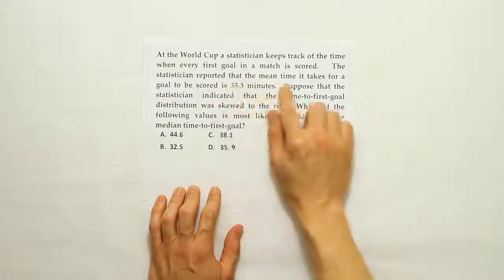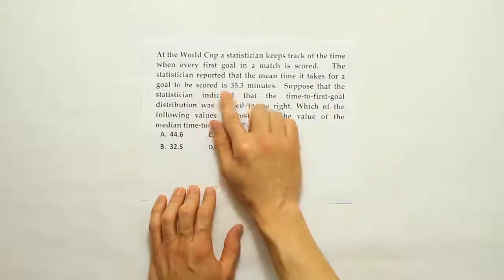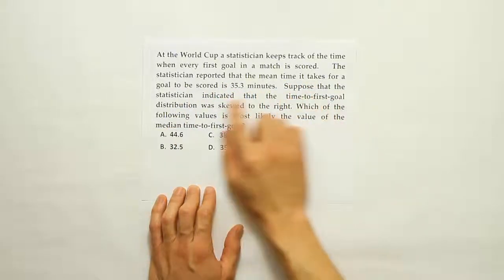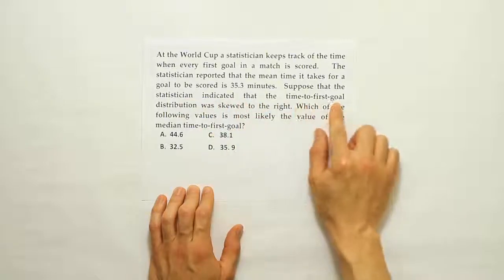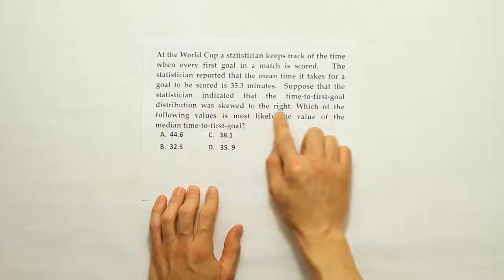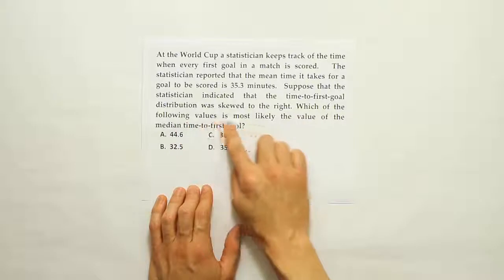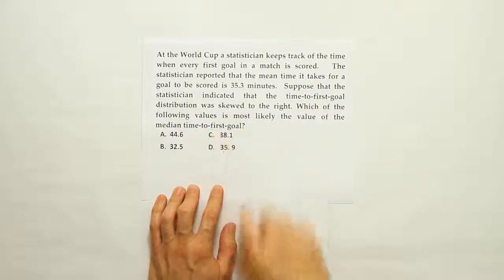a statistician keeps track of the time when every first goal in a match is scored. The statistician reported that the mean time it takes for a goal to be scored is 35.3 minutes. Suppose that the statistician indicated that the time to first goal distribution was skewed to the right. Which of the following values is most likely the value of the median time to first goal?